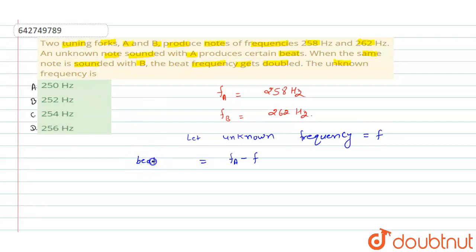So beat for A is equal to modulus of f_A minus f. Similarly, beat for B will be equal to modulus of f_B minus f.